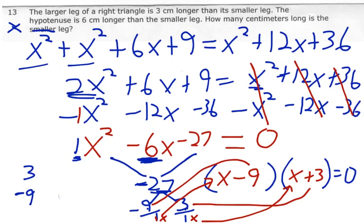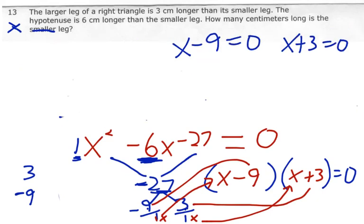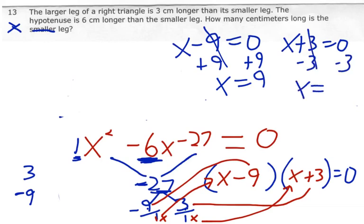And now all I need to do is set them equal to 0 and solve for x. And it will just be a one step equation. So here we go. x minus 9 equals 0. I just add 9 to both sides. And I get x equals 9. And then minus 3 and minus 3. I'm going to get x equals negative 3.